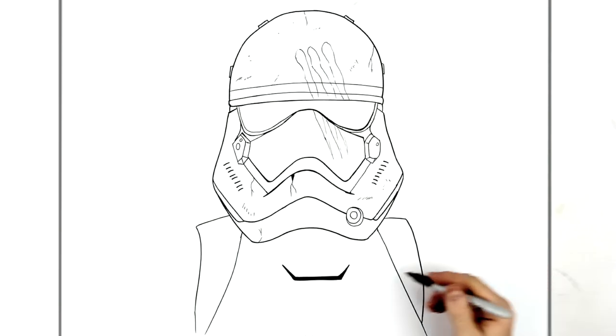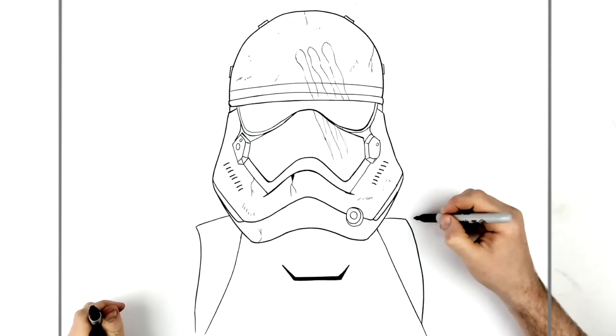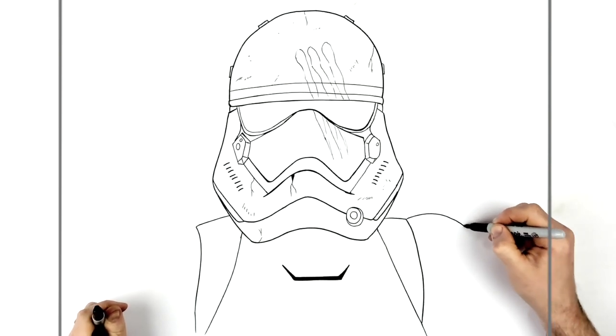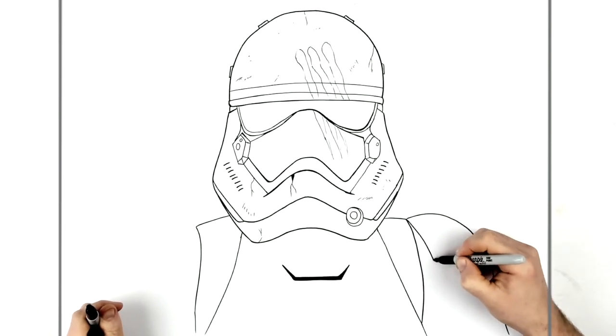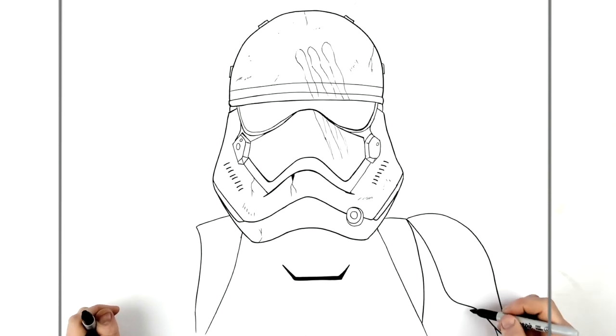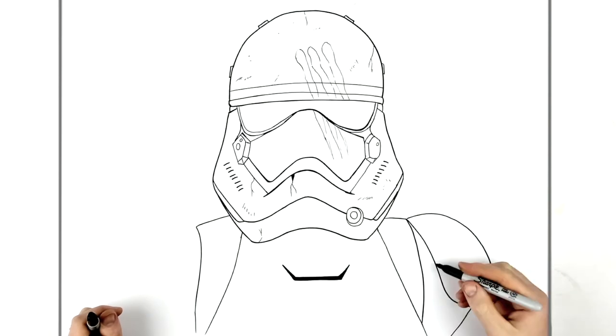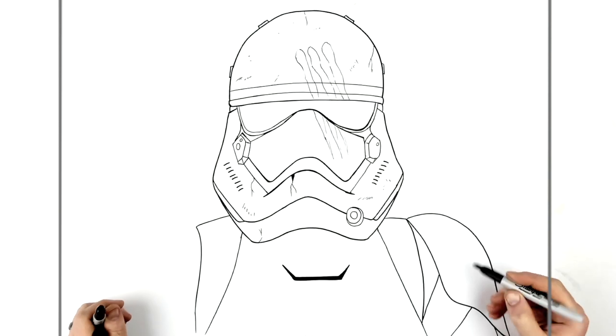Like so. And so then shoulder armor comes out like that. And then the inside of it comes down, around to like here. Then we can see his arm sort of inside here, like in there.